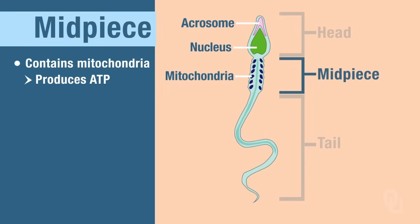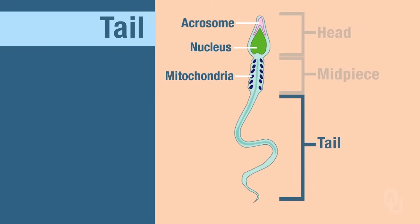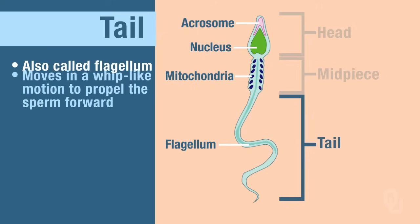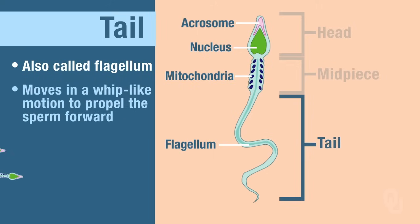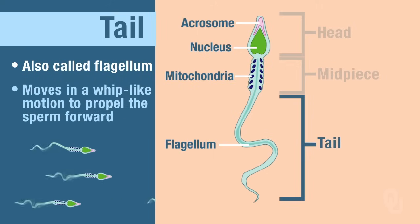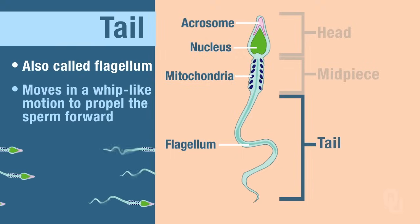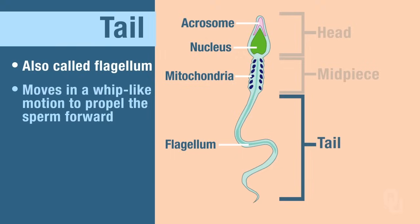The last segment of the sperm is the tail. The tail is called the flagellum, and this is what the sperm use in order to propel themselves. When we talk about motility of the sperm, you can think about the flagellum whipping — its whip-like motion is what propels the sperm, or causes the sperm to move.